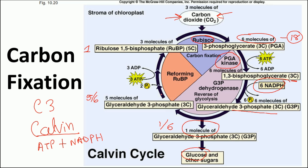One out of six G3P molecules is used to make sugar, while five out of six are used to regenerate RuBP through a series of reactions involving phosphatase activity and addition of phosphate groups. This regeneration step requires three molecules of ATP and converts five molecules of G3P into three molecules of ribulose 1,5-bisphosphate. Both account for fifteen carbons, and once RuBP is regenerated, the Calvin cycle can run again.